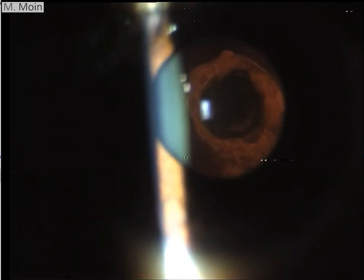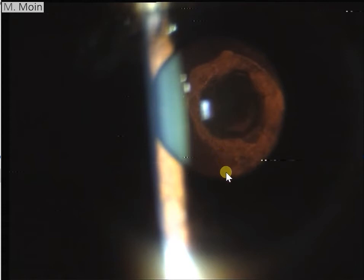But red reflex is actually which gives you a great view of this. This is the posterior subcapsular opacity which you're seeing around it and this is the ring shaped or the onion peel or the bullseye appearance of a posterior polar cataract.